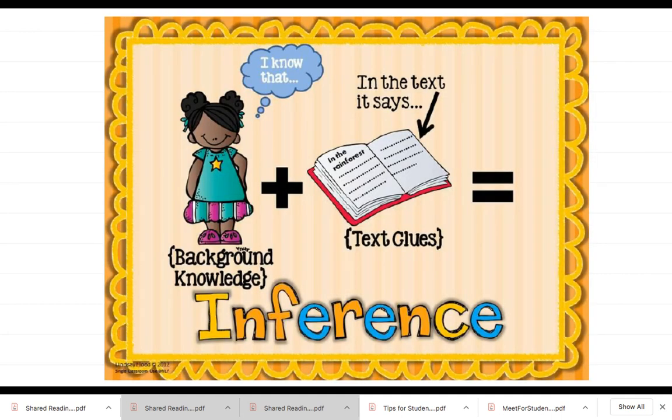We also are going to be making inferences. When we make an inference, this is something that we think about what we already know and what the clues in the text are telling us. So when you're inferring something, the author does not come out directly and state that piece of information. But because of what you already know and the clues provided to you, it's easier for you to make that inference.